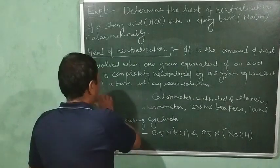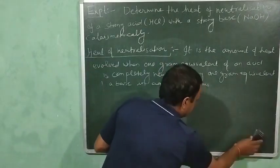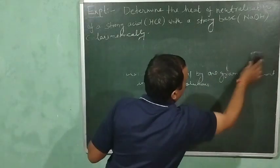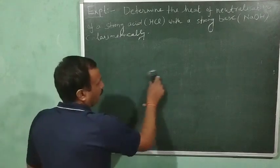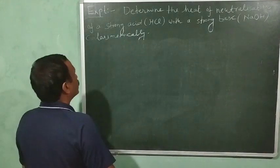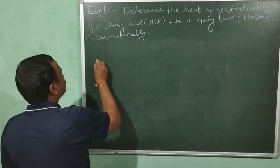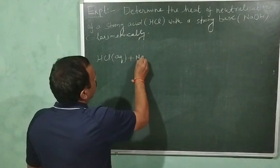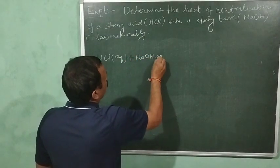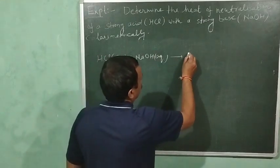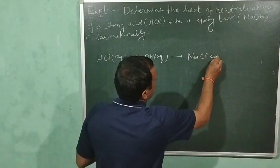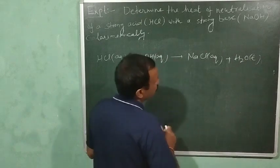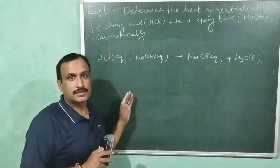Now let us discuss the chemical equation of this experiment. It is a simple equation: one gram equivalent of HCl is neutralized by one gram equivalent of NaOH. So we have HCl(aq) + NaOH(aq) → NaCl(aq) + H₂O(l).